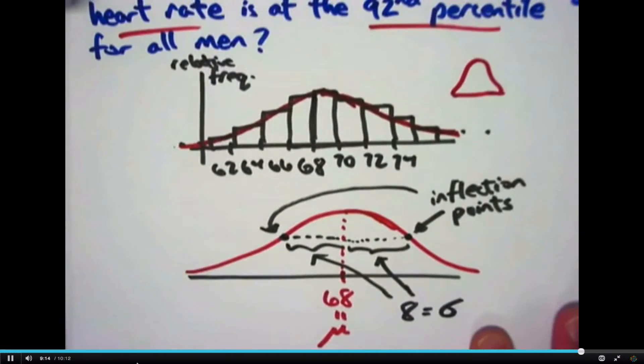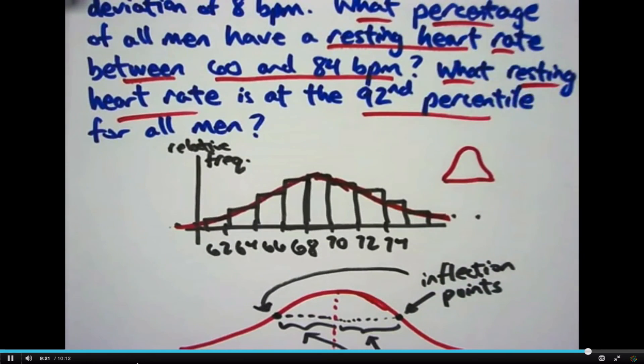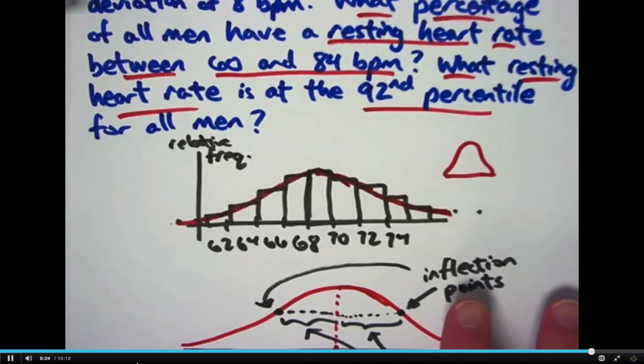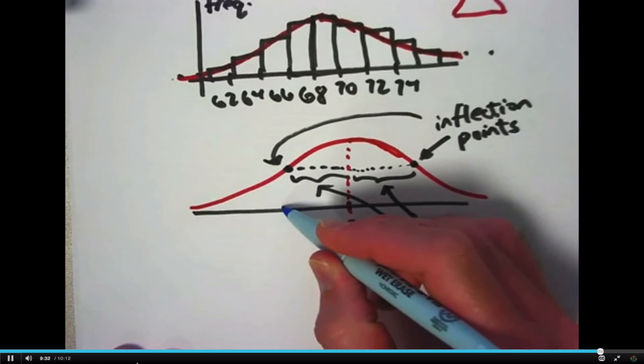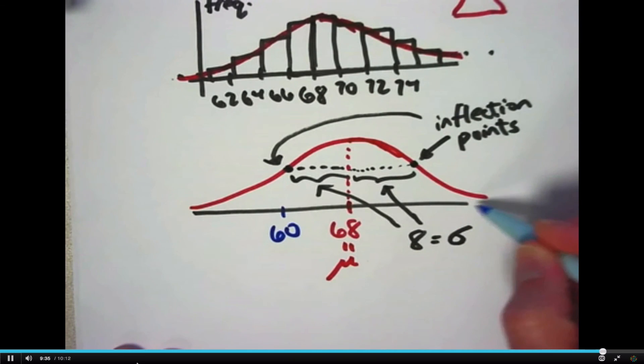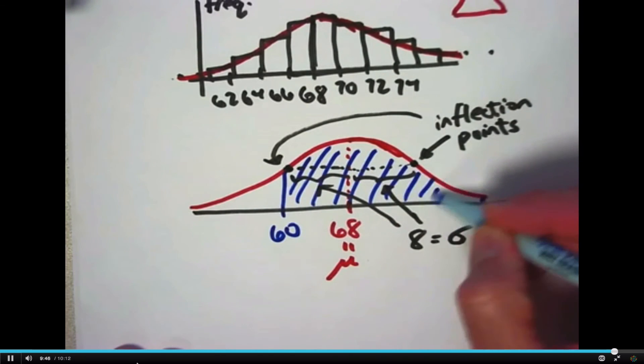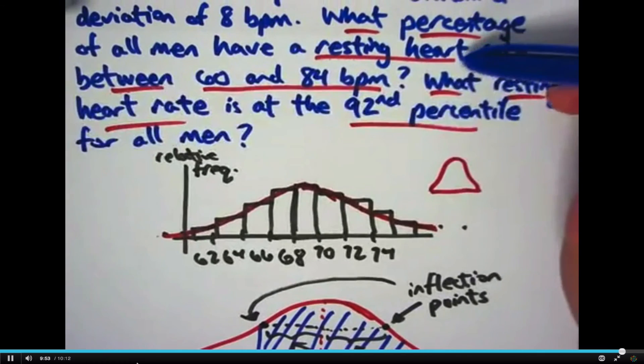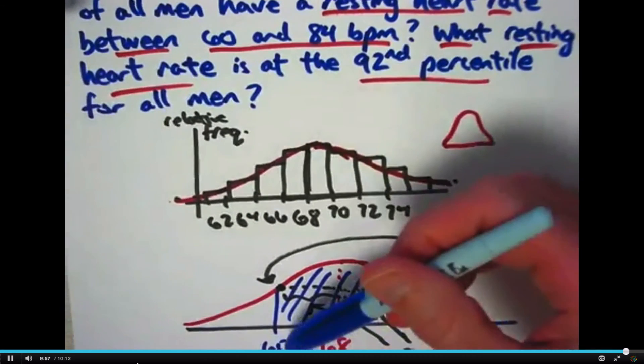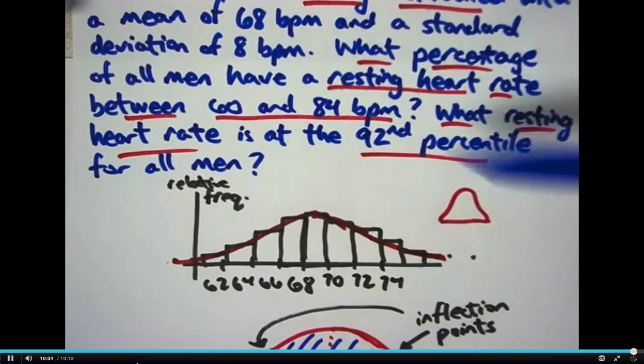So, very quickly, where we're going to go from here in the next video, we're going to try to answer this question. And here's the key thing. To figure out the percentage of all men that have a resting heart rate between 60 and 84 beats per minute, what you need to do is you need to find 60 and 84 in this picture. And it'll turn out 60 will be right about here, and 84 will be over here somewhere, maybe right about there. And it turns out that the area under the curve, the curve is constructed in such a way that the area under the curve gives the percentage of all men having this resting heart rate. The area under the curve between 60 and 84 gives the percentage of all men that have that resting heart rate between 60 and 84 beats per minute.